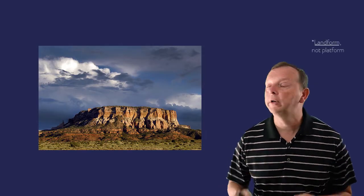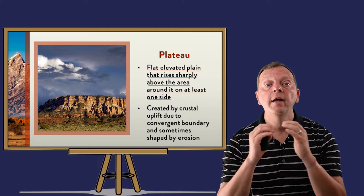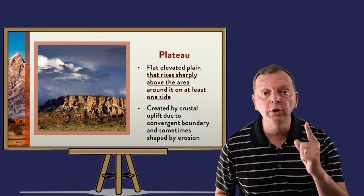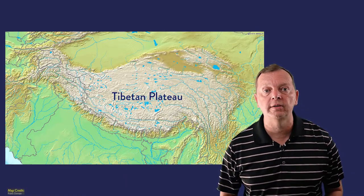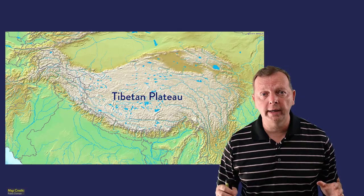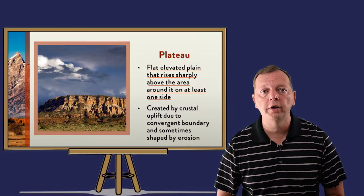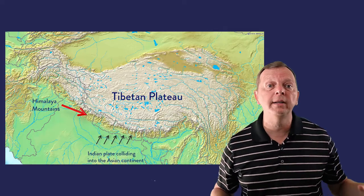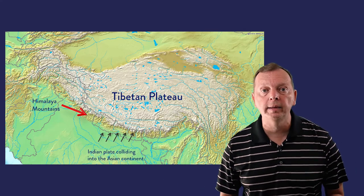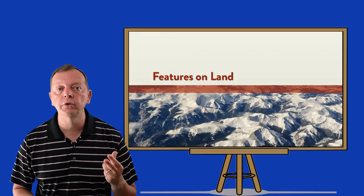If you go into the American Southwest, you may find a special type of platform called the plateau. A plateau is a flat elevated plain that rises sharply above the area around it on at least one side. These can be rather small or huge, such as the Tibetan Plateau in Central Asia, which is four times the size of Texas. Plateaus are often created by the collision of tectonic plates. The Tibetan Plateau was actually formed by the same collision that created the Himalayan mountains to the south. Angular steep monolith plateaus have been further shaped by wind and water carrying away softer rock. Those are the four major landforms: plains, mountains, hills, and plateau.